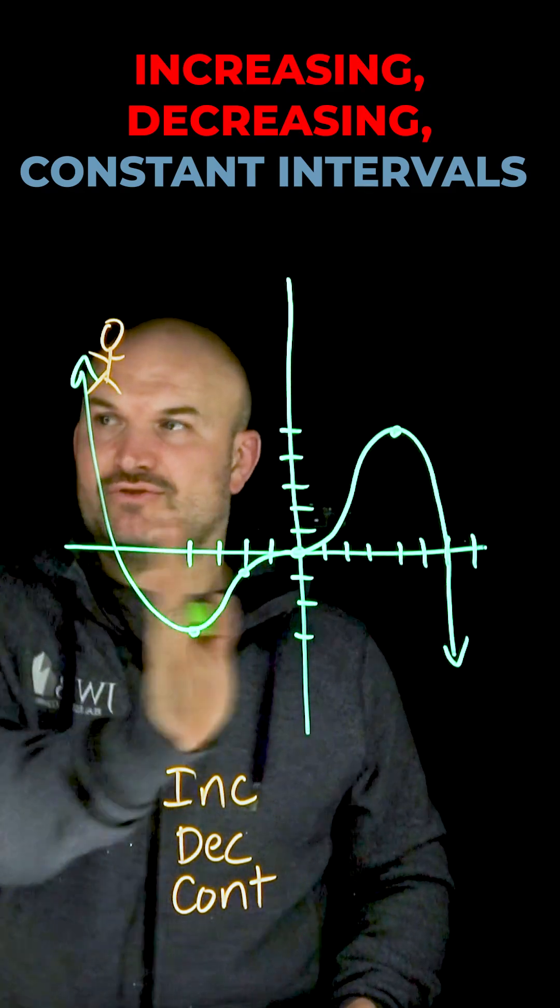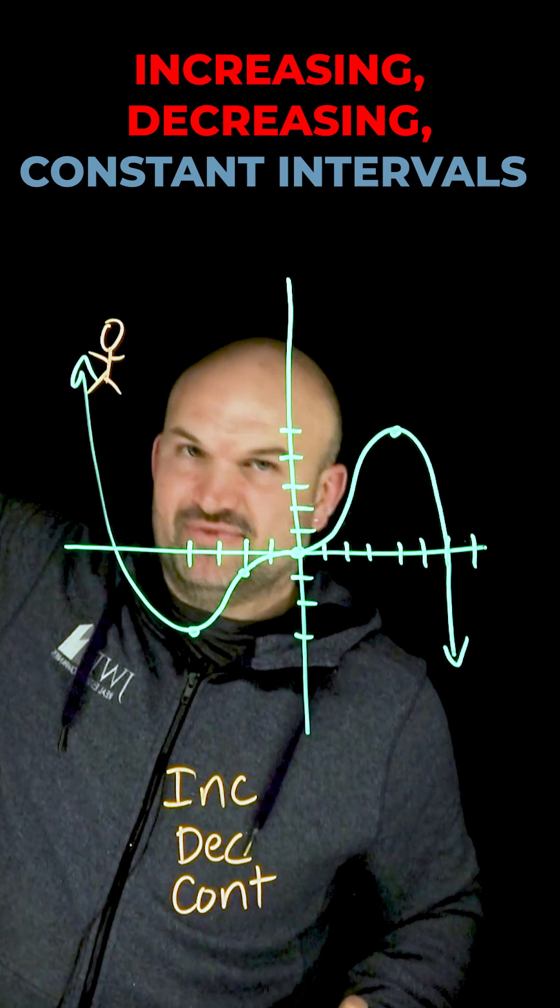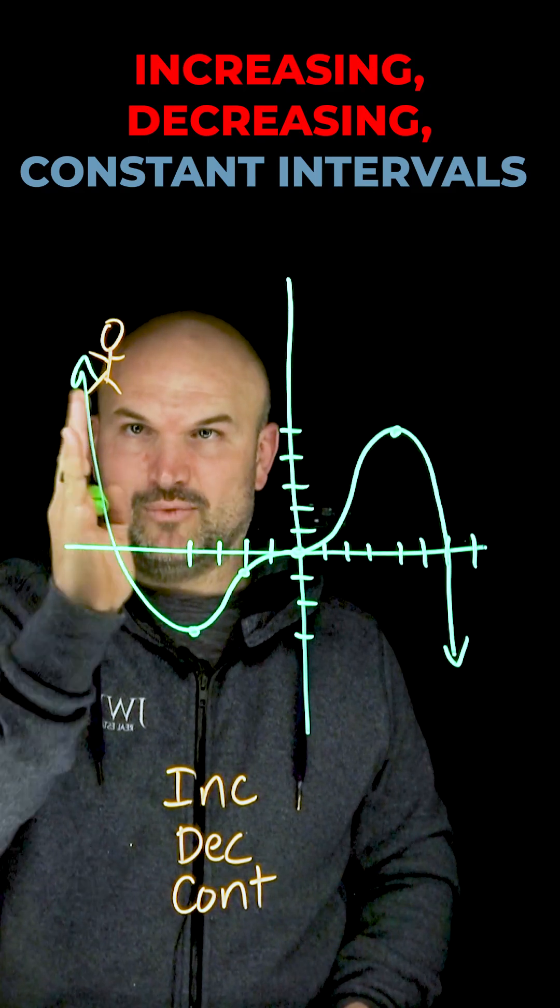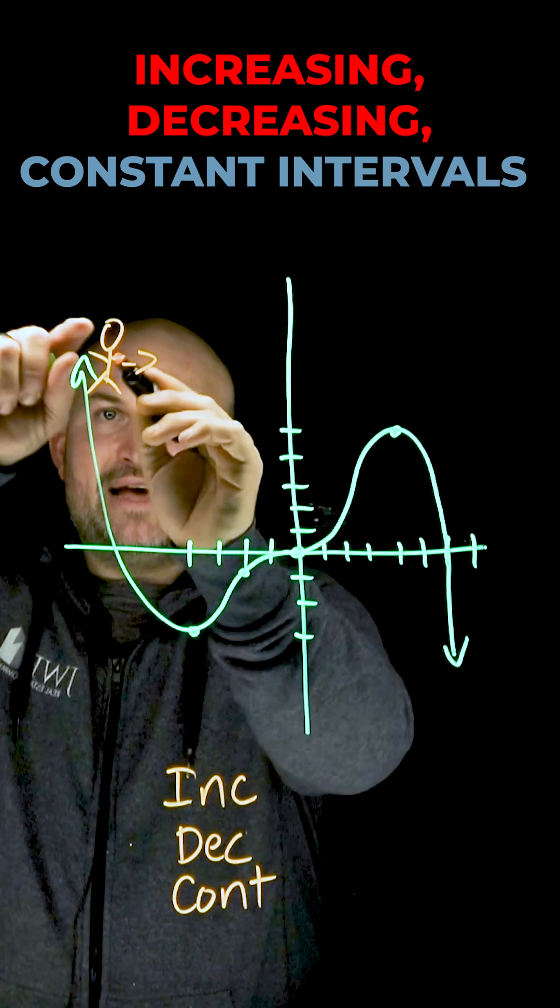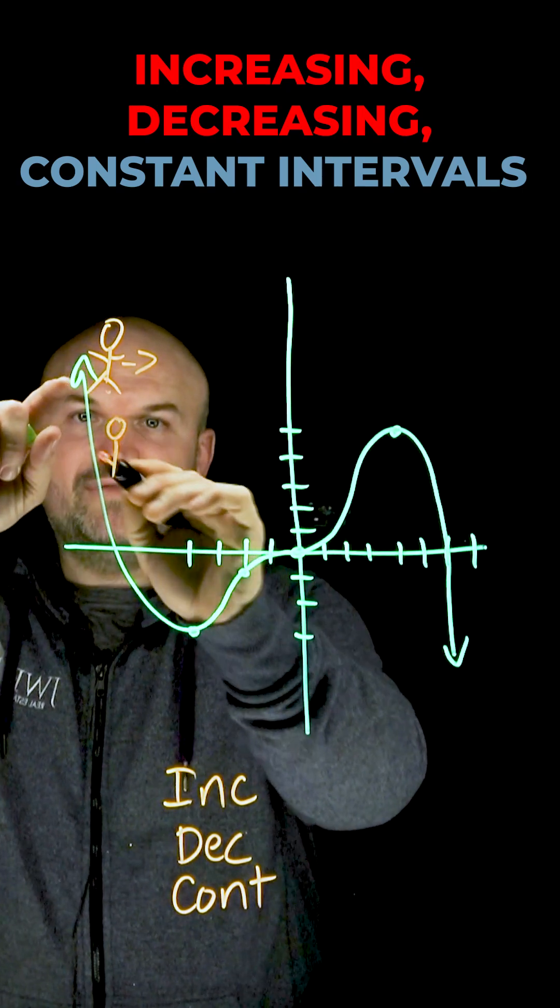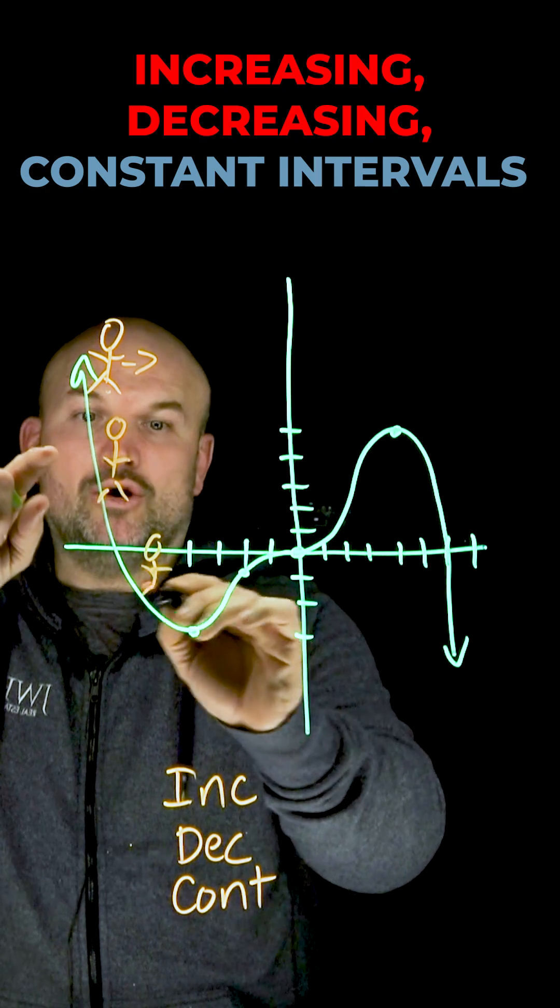So we're going to start here, even though this graph continues going left infinity and up infinity, we're starting here and we're just going to read it from where we can see it. So as I start moving to the right, you can see that the vertical distance here of this person is going to be going down.